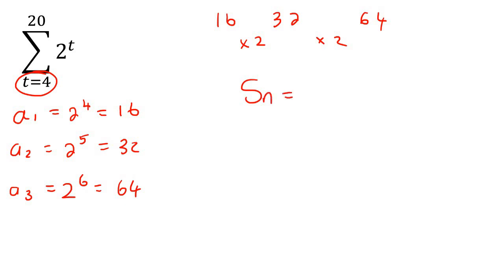So, then we can use the geometric sum formula, which is the one I've showed you before, which goes like this. Now, A1 is 16. R is the number that you're multiplying with, which would be 2, because you're multiplying by 2.